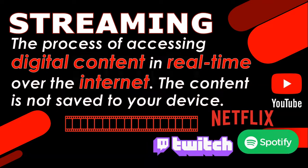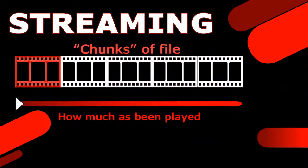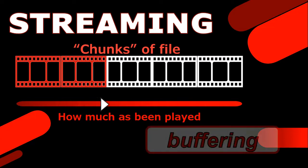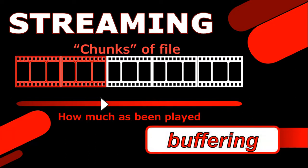Examples of streaming services include YouTube, Netflix, Spotify, or Twitch. As you watch the video, your device has to get the next chunk of the audio or video file so that it can keep playing it. But sometimes, if the internet is slow or busy, it can't download the next chunk fast enough and the video has to stop and wait for more to download.